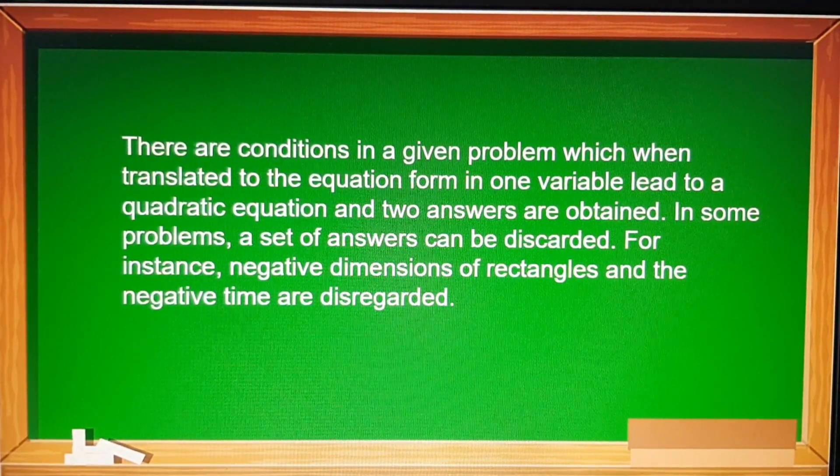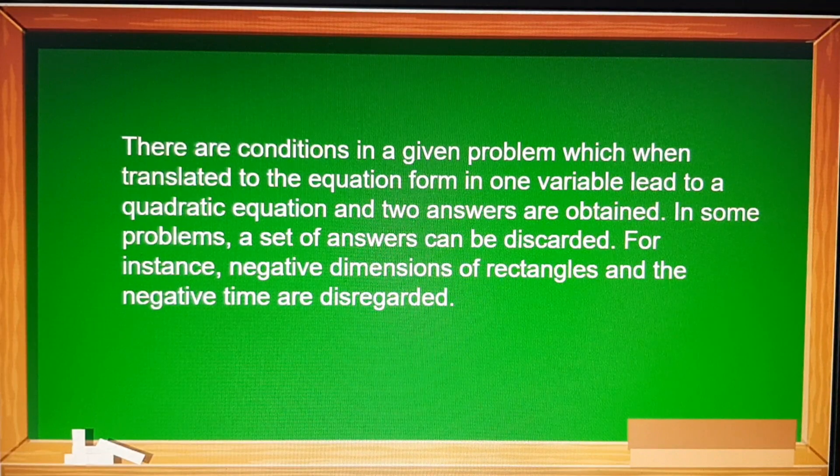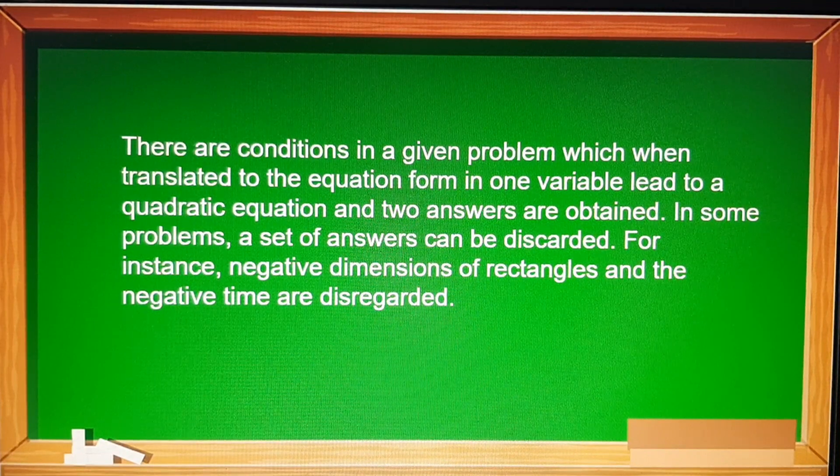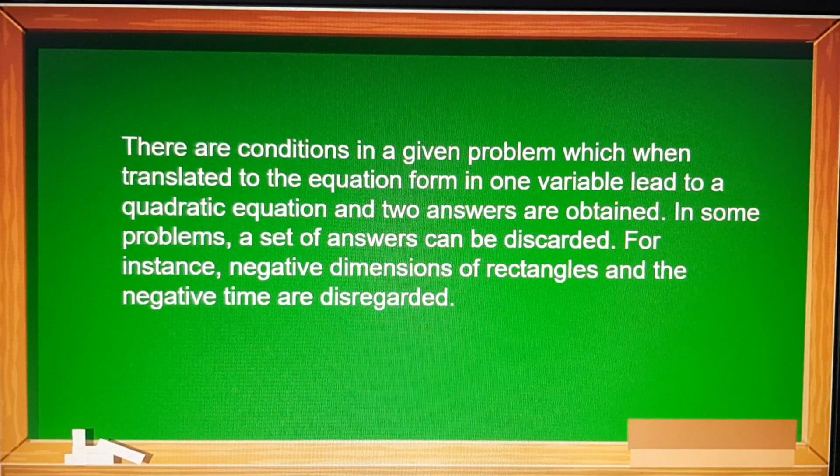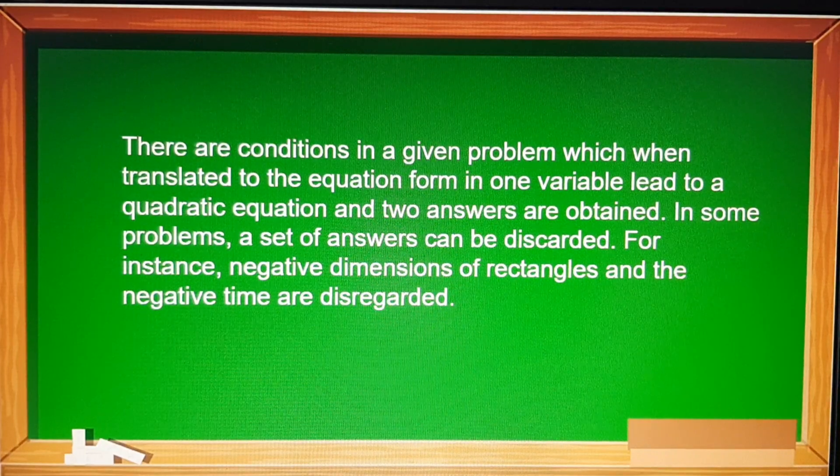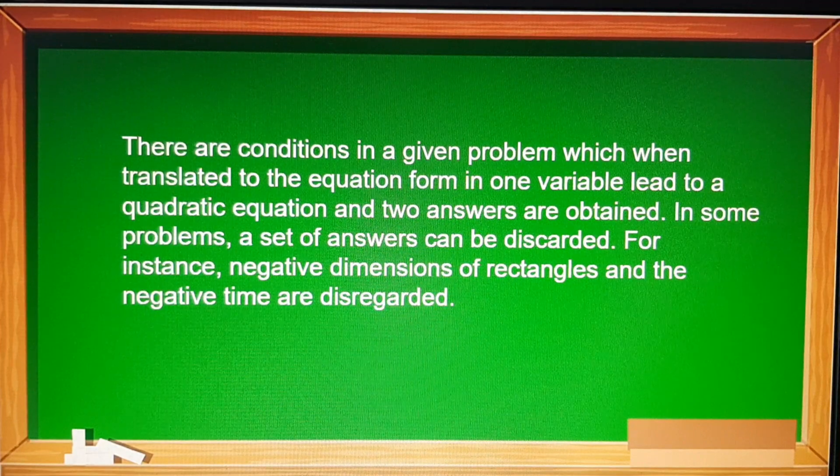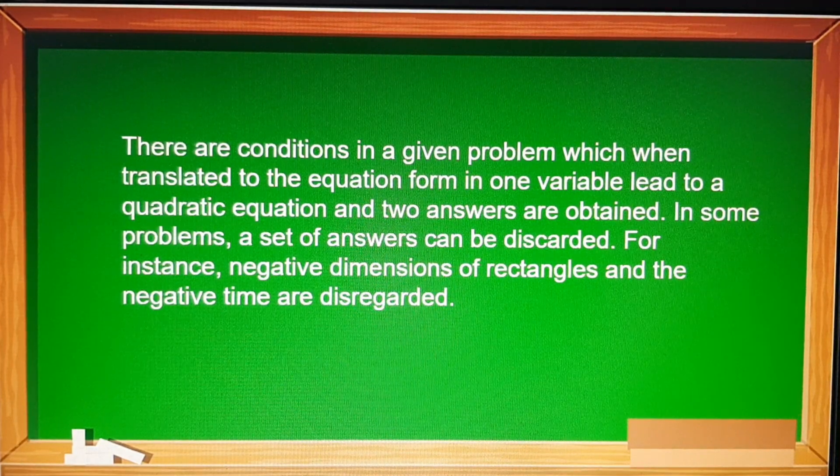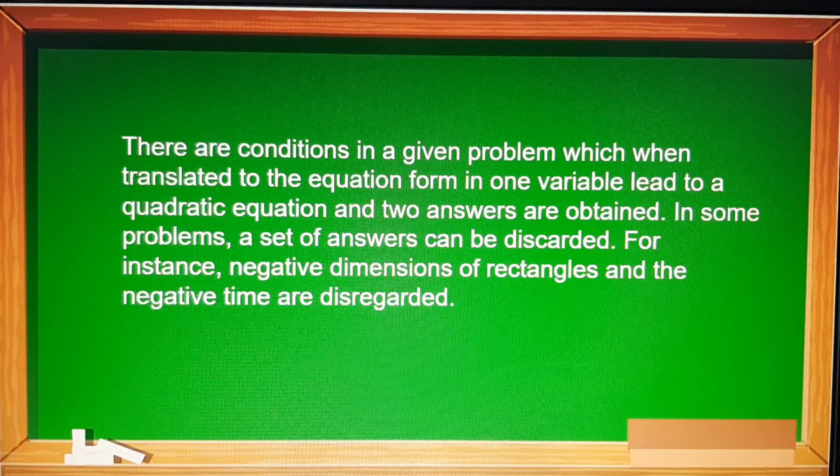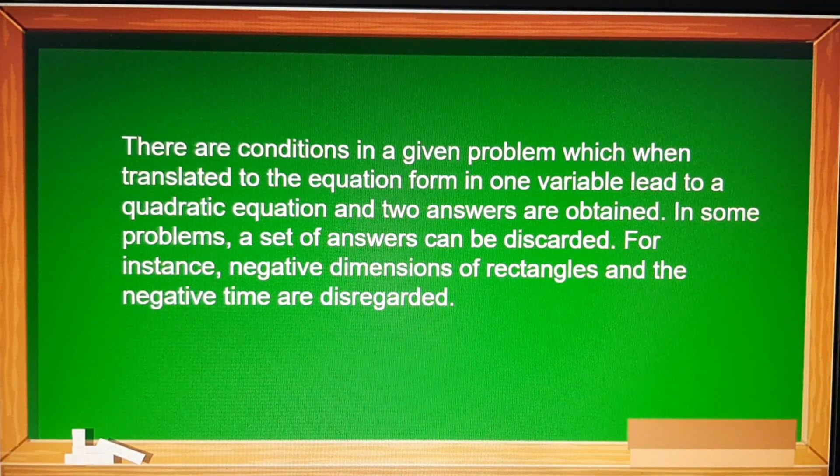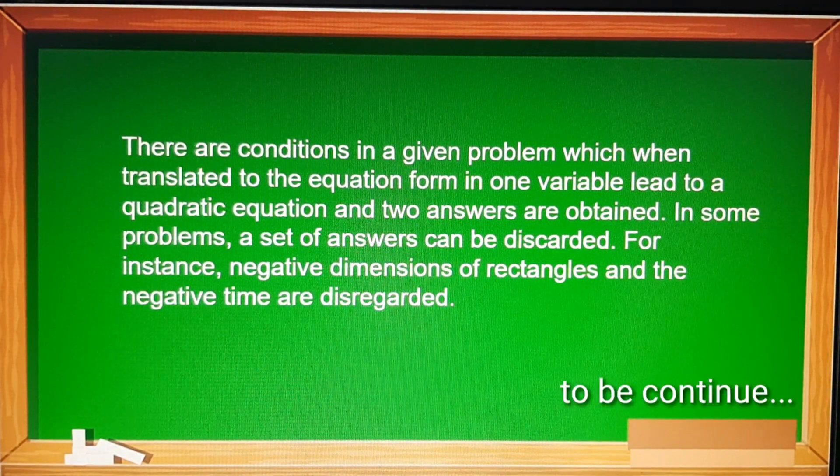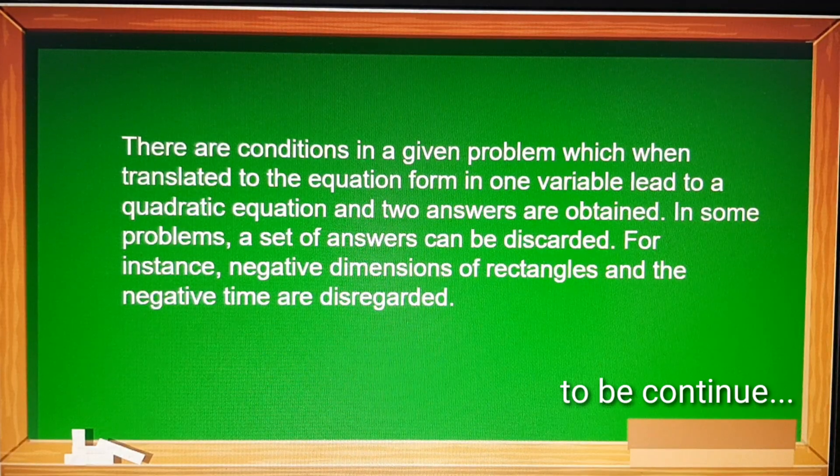Note that there are conditions in a given problem which when translated to the equation form in one variable lead to a quadratic equation and two answers are obtained. In some problems, a set of answers can be discarded. For instance, negative dimensions of rectangles and negative time are disregarded. That is what happened to our first example wherein negative 12 is being disregarded. Thank you so much.